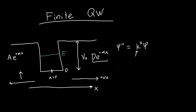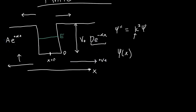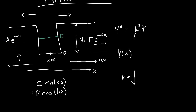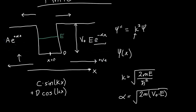To be absolutely clear, these are the solutions in the different regions. To the right of the quantum well, we have d·e^(−αx). To the left, we have a·e^(+αx). And in the middle, we have some combination of sines and cosines: c·sin(kx) + d·cos(kx). We defined k = sqrt(2mE/ℏ²) and alpha = sqrt(2m(V₀−E)/ℏ²). We made that substitution just to make life look cleaner.